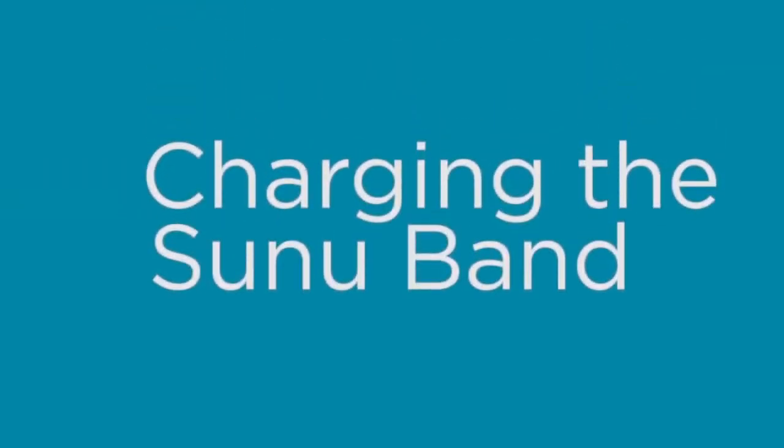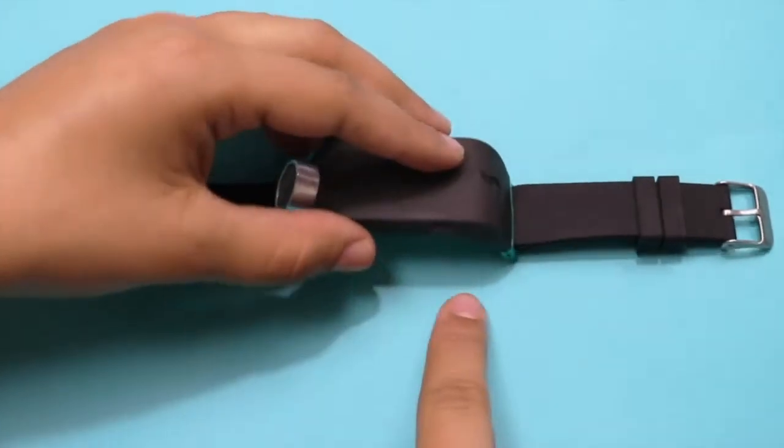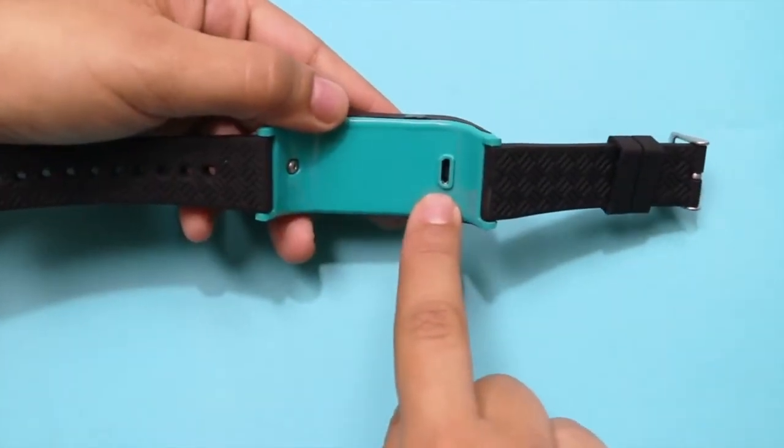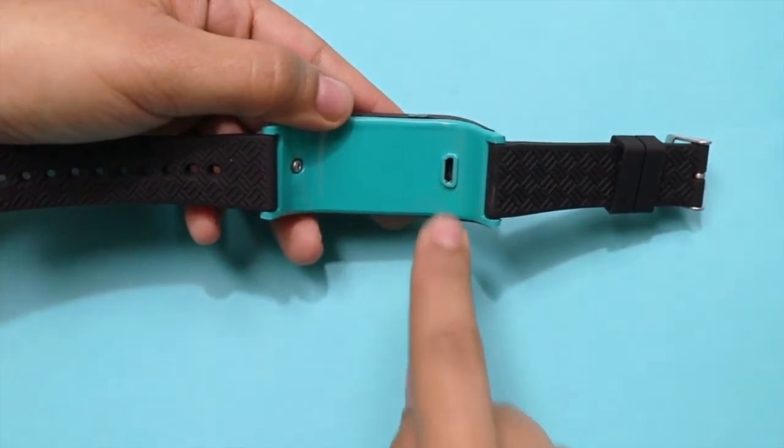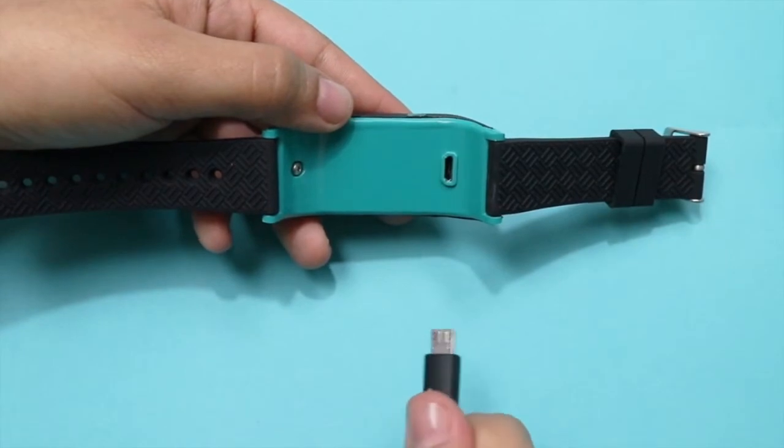Charging the Sunuban. Begin by identifying the micro USB inlet that's located on the bottom side of your device. Insert the cable into the connection slot until you feel a firm click.